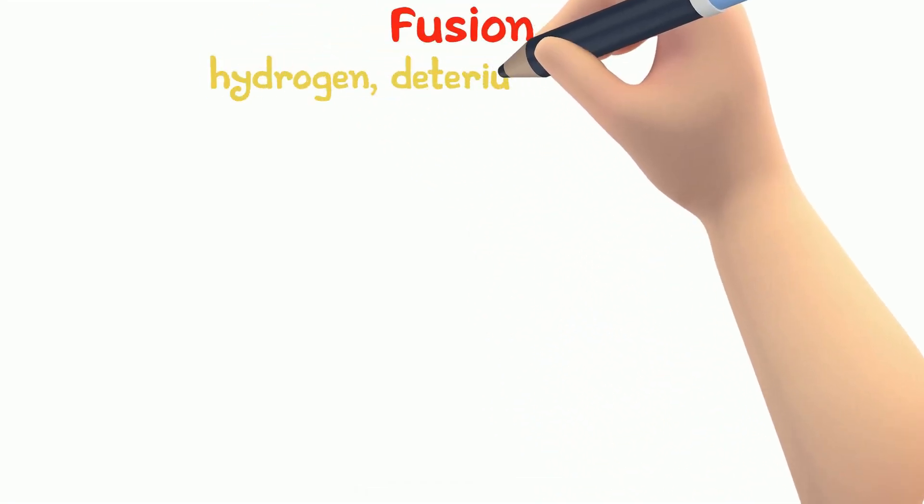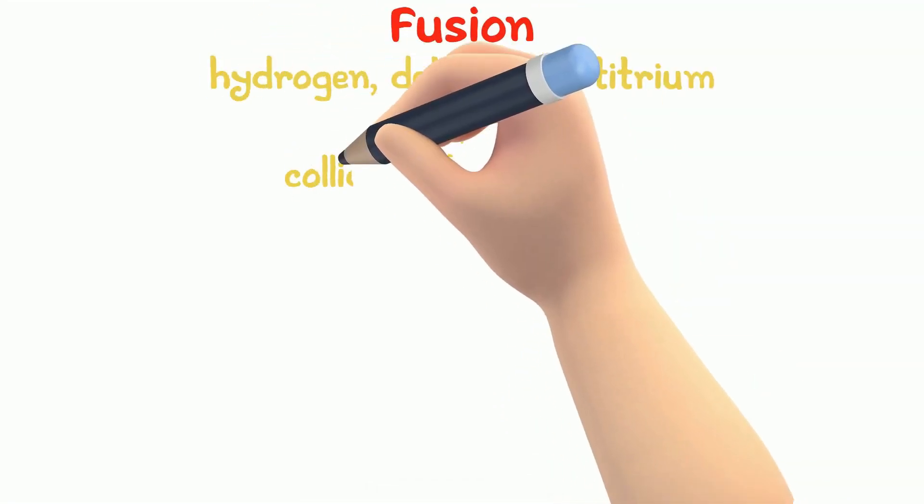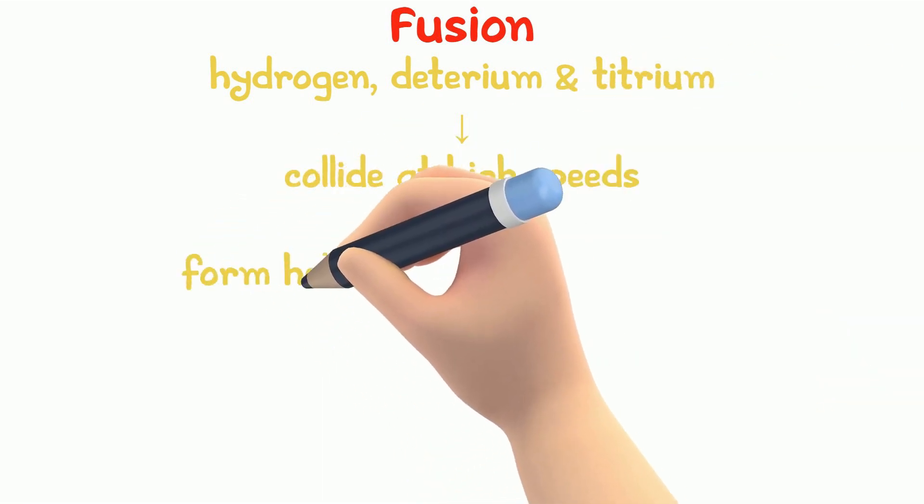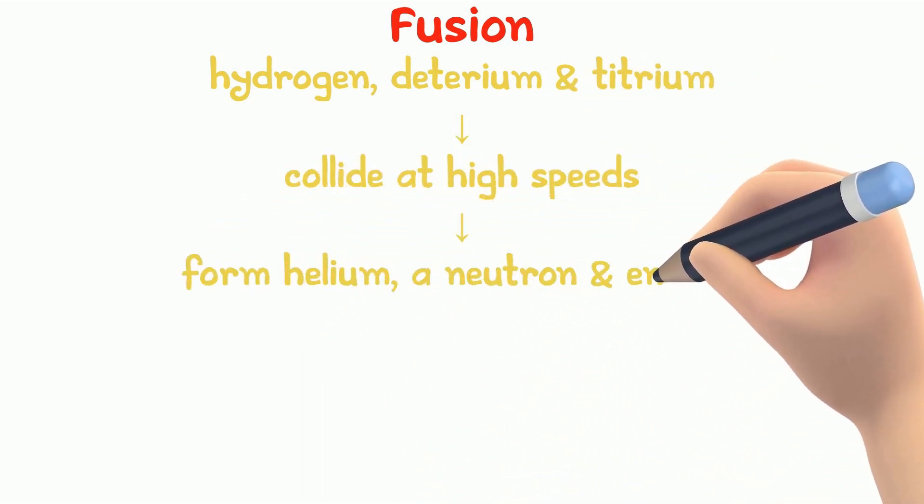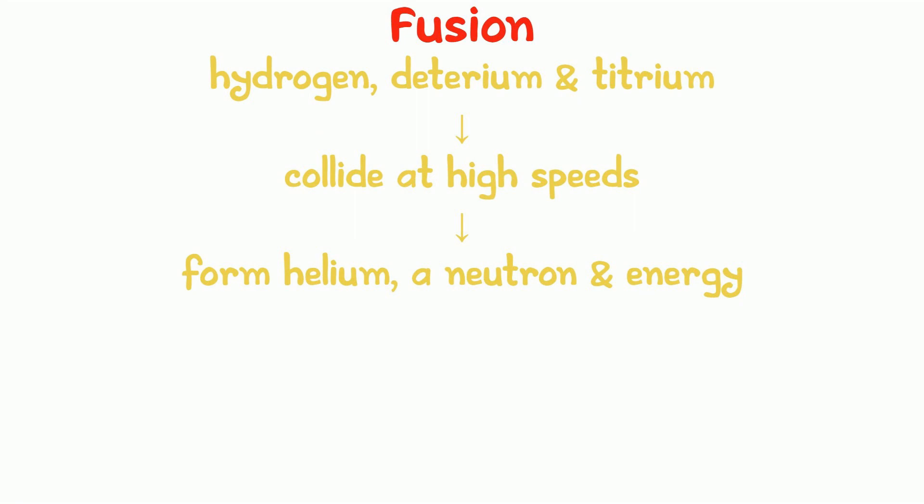An example of the fusion process would be when hydrogen and deuterium and deuterium collide at high speed to form a helium nucleus, a neutron, and large amounts of energy. This fusion process is the energy source for sun and stars.